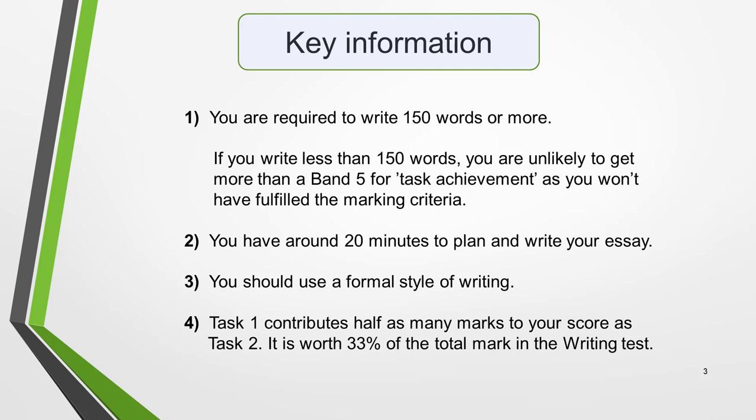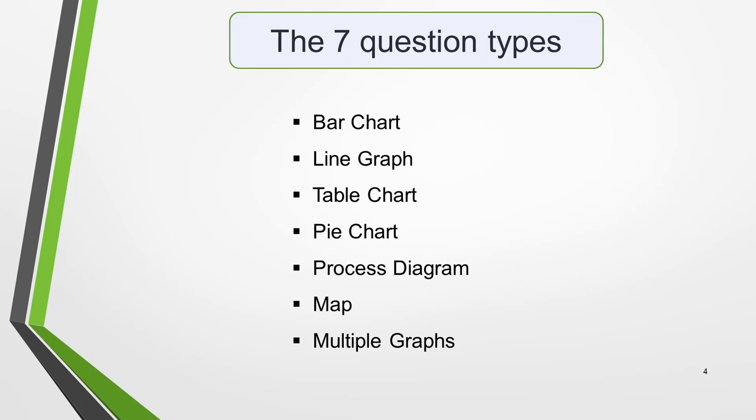Now onto an overview of task 1. You'll be presented with one of these graphics: a bar chart, a line graph, a table chart, a pie chart, a process diagram, or a map. You can also get a question that includes two different types of graphics — for example, a bar chart and a table, or a line graph and a pie chart. These are called multiple graph questions.